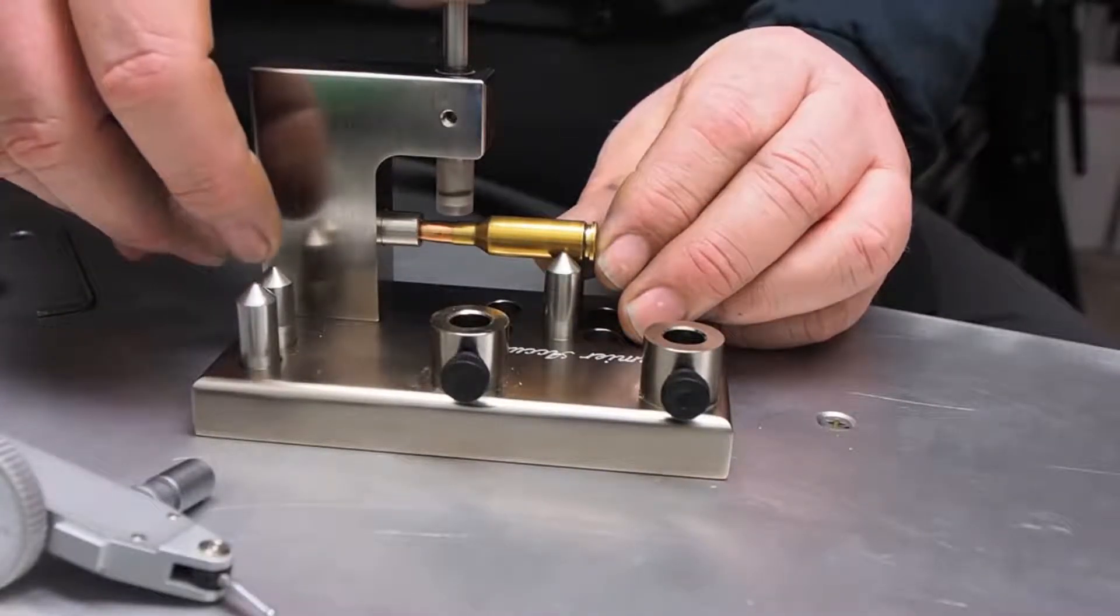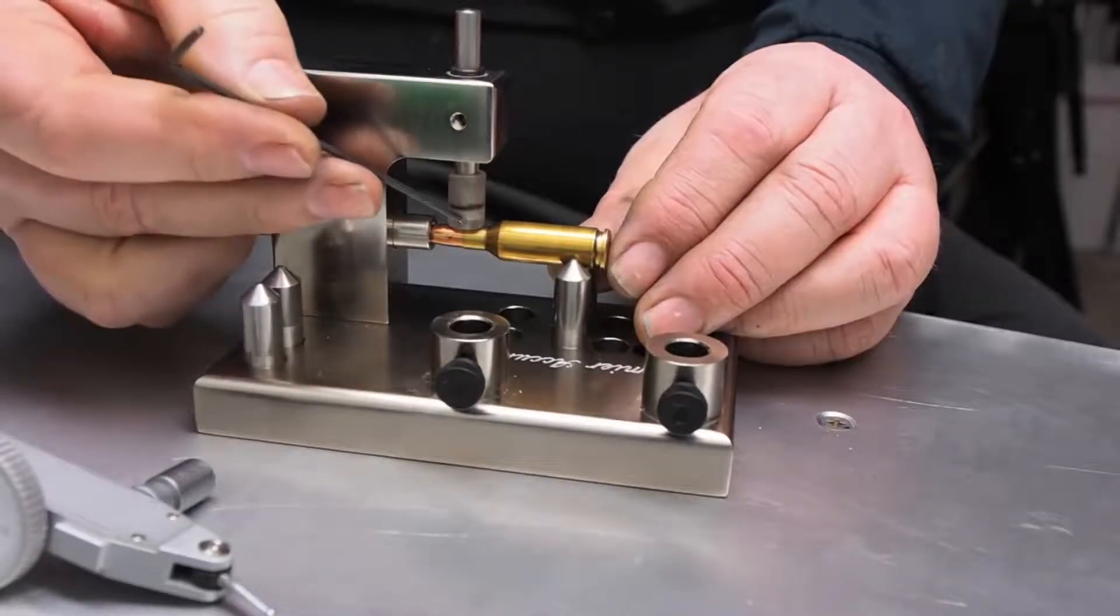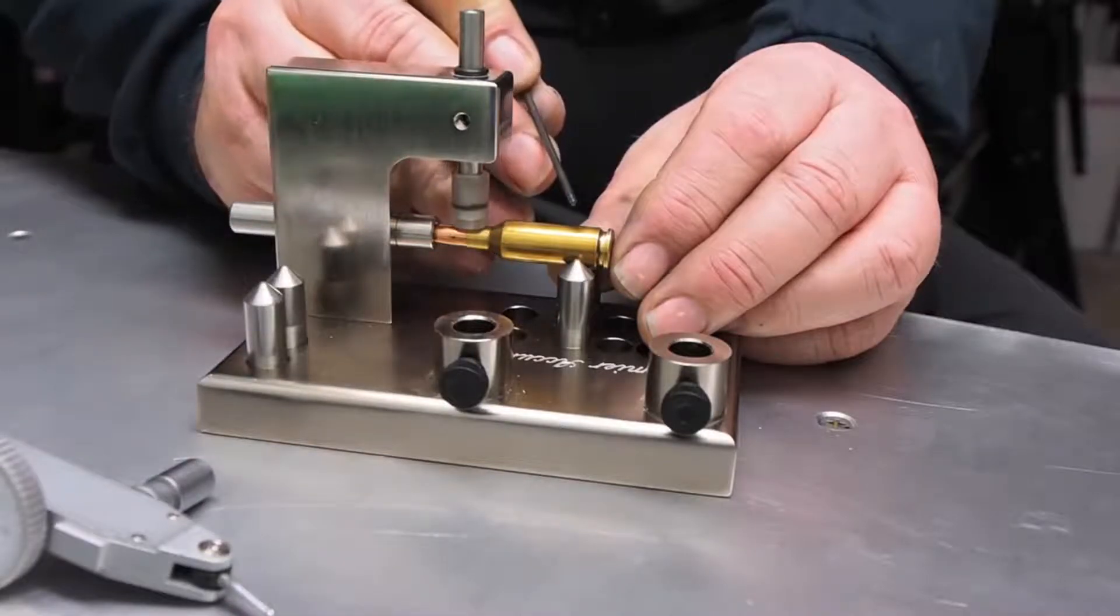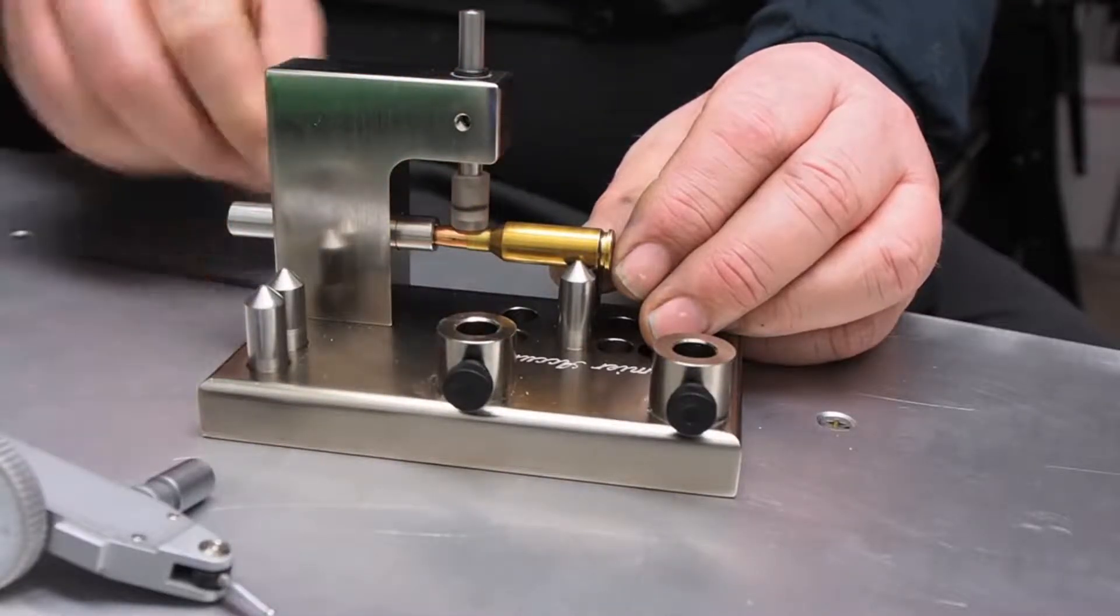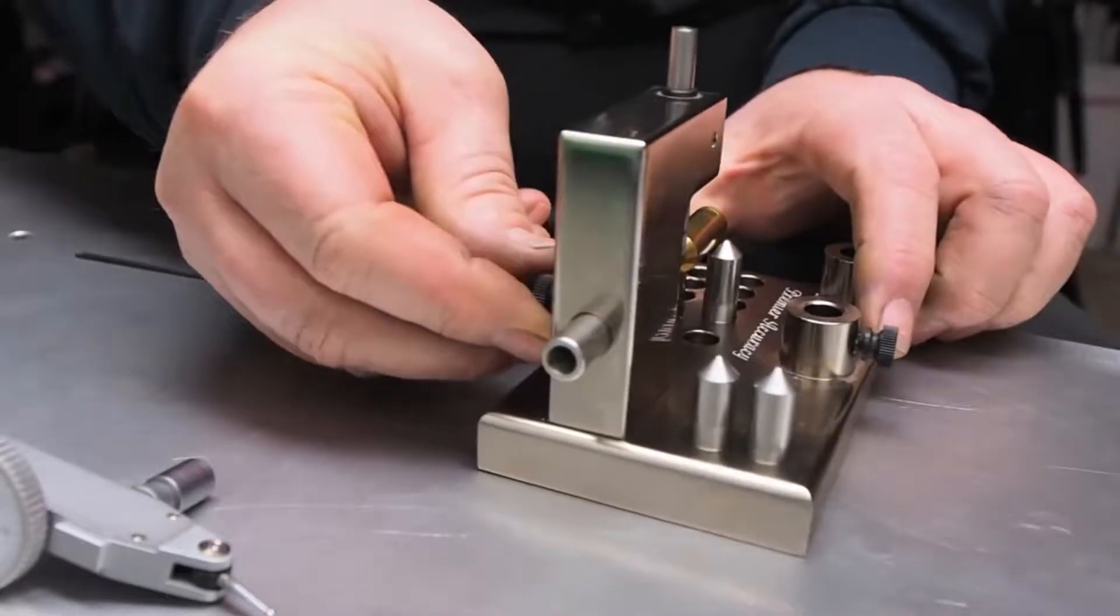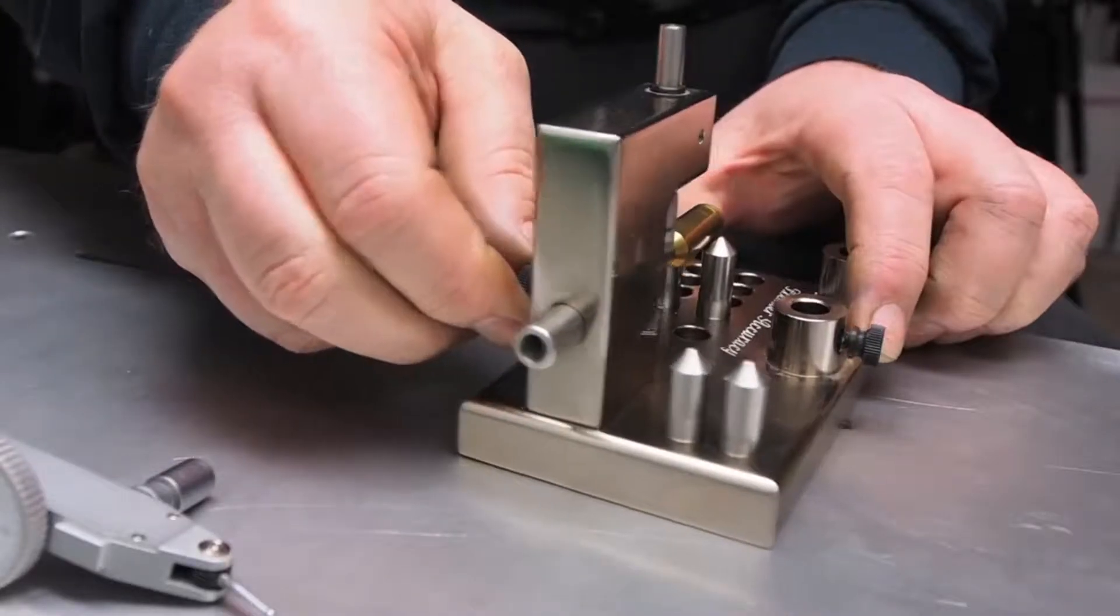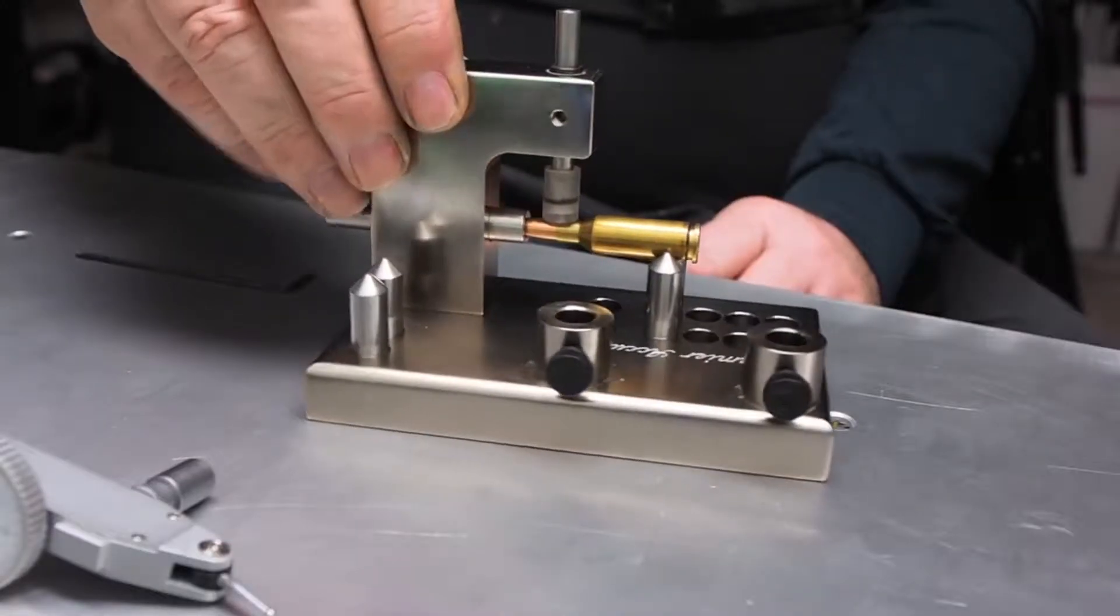Bring this down. And you can see we are away from the shoulder, yet still resting on the neck. And we have good support here, where the case would be running out in the chamber. Then simply come back around. Finger tighten this. It does not have to be tight. Just finger tight. And you can see that we're level.